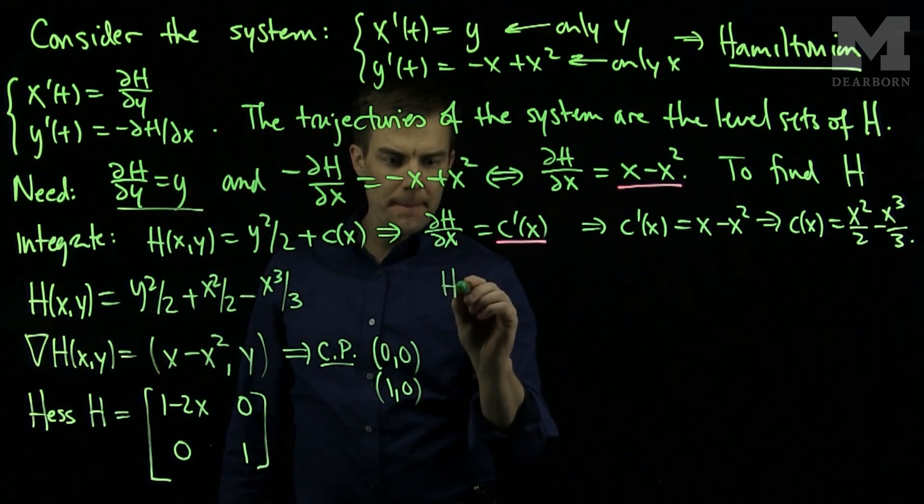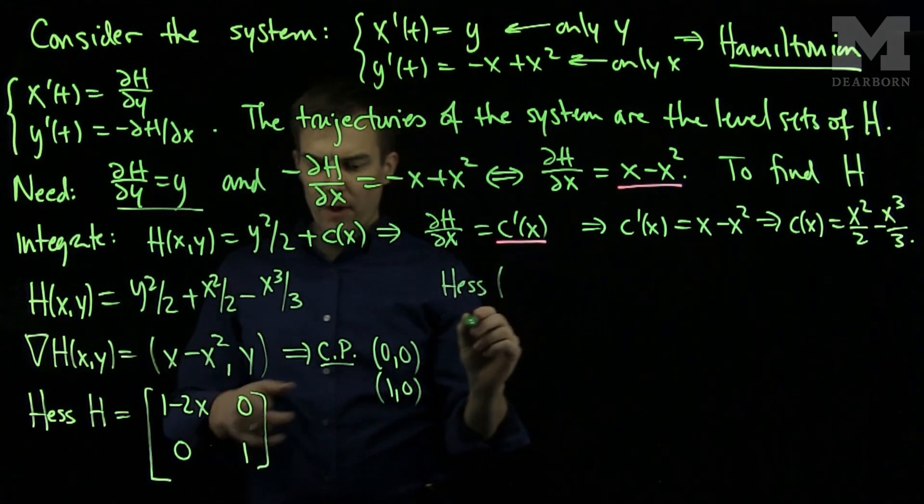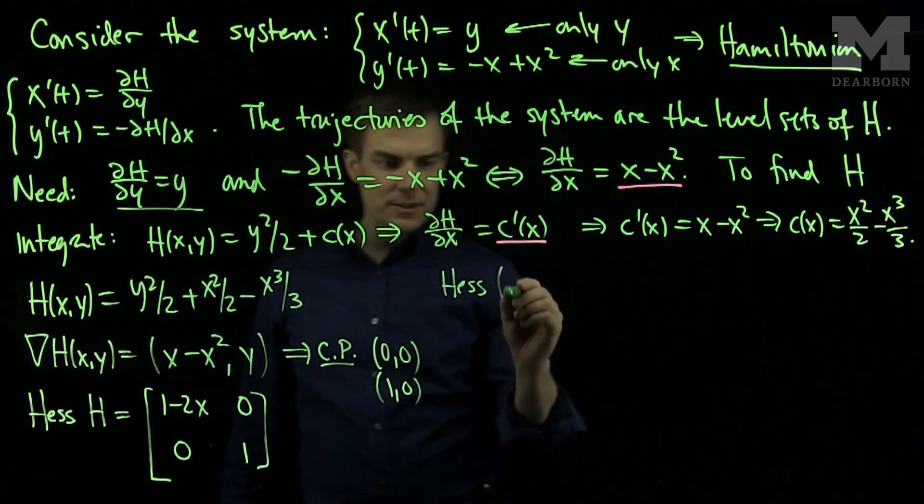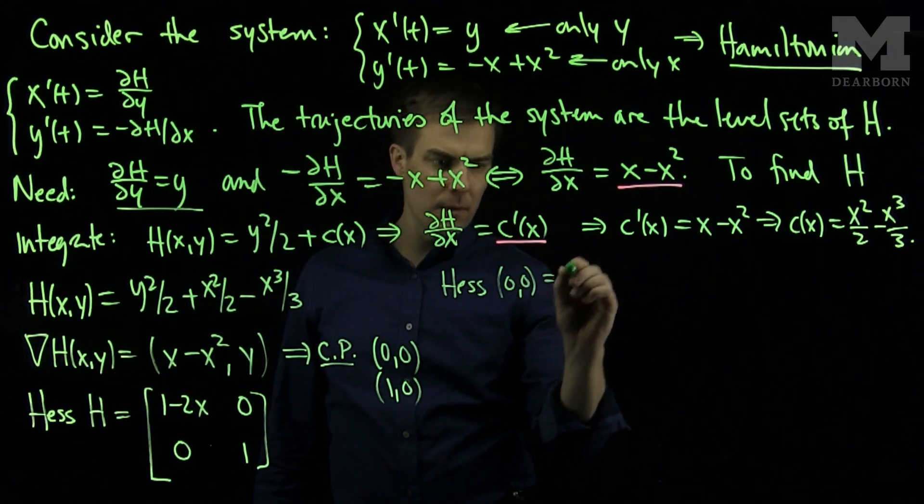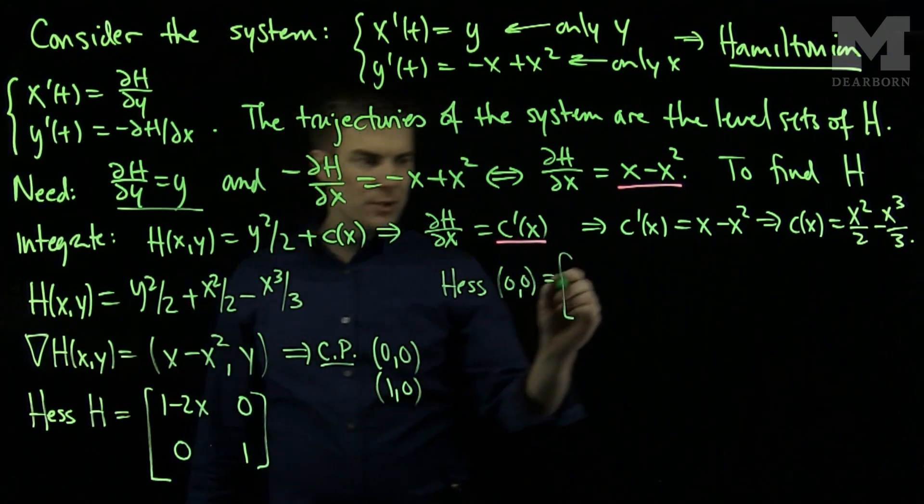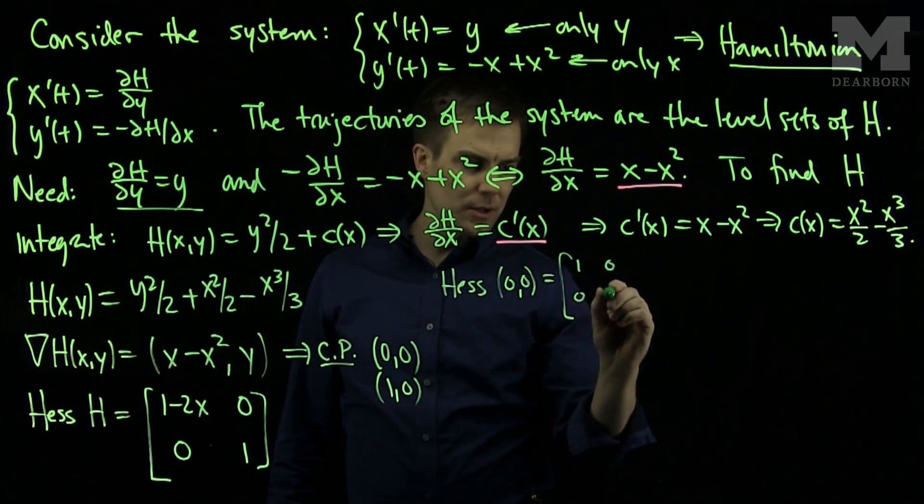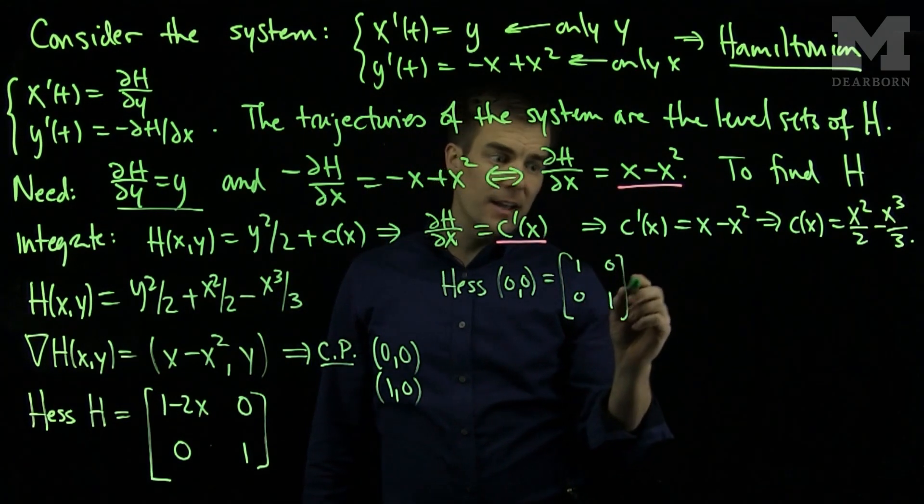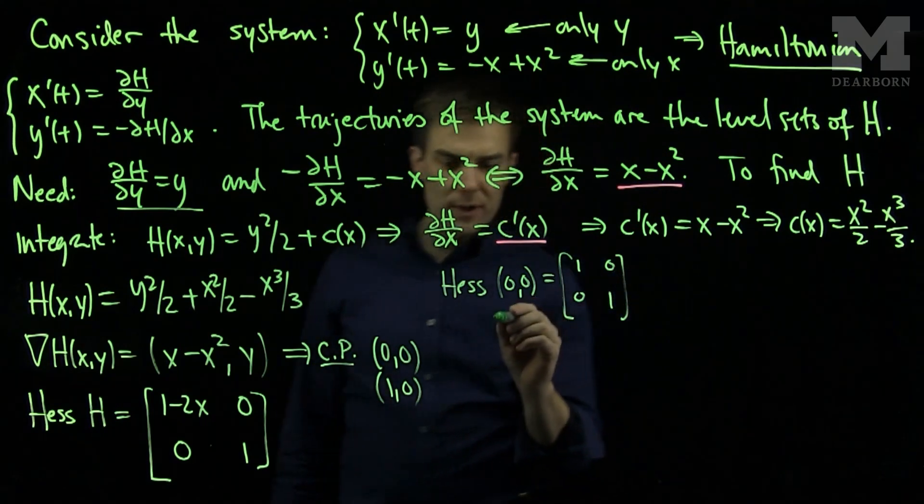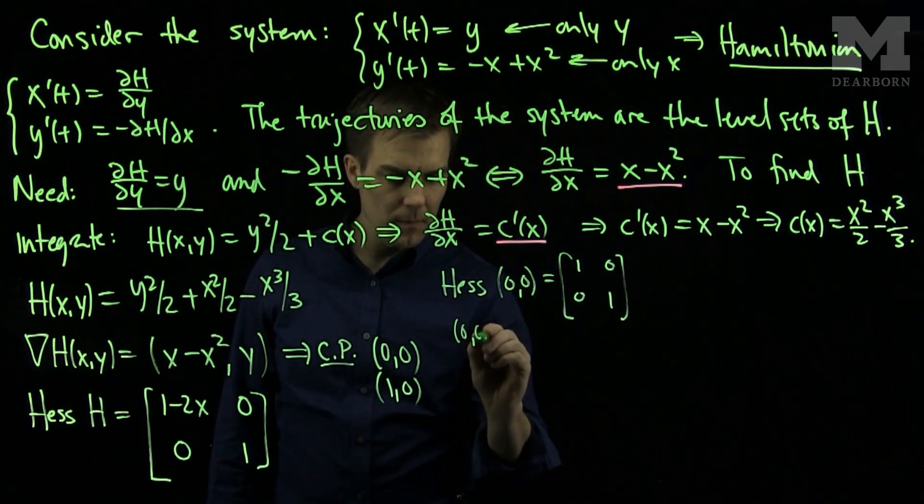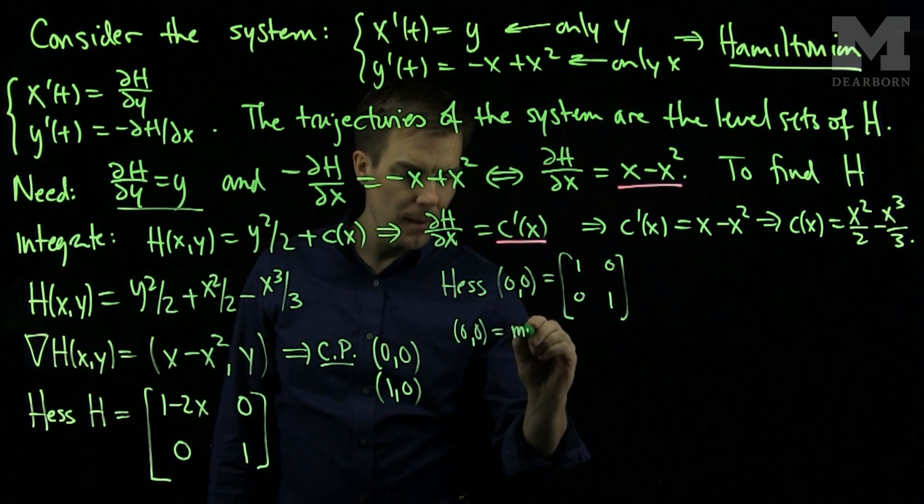The Hessian of our function H at (0,0) is the matrix [1, 0; 0, 1]. Both the eigenvalues are positive. So the point (0,0) is a minimum.